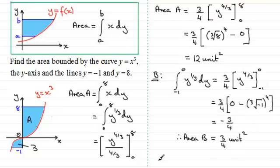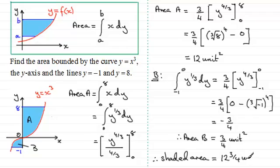So the total shaded area is the sum of areas A and B: 12 plus three quarters, giving 12 and three quarter units squared. I hope that gives you an idea of how to work out the area bounded by a curve y equals some function of x, the y-axis, and the lines y equals a and y equals b — using this formula, while taking care when areas fall on either side of the y-axis.